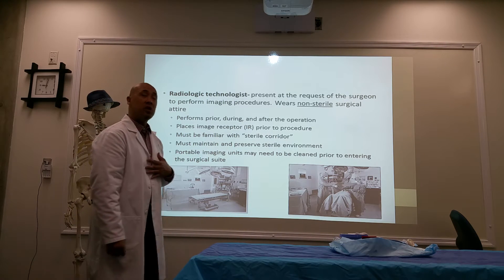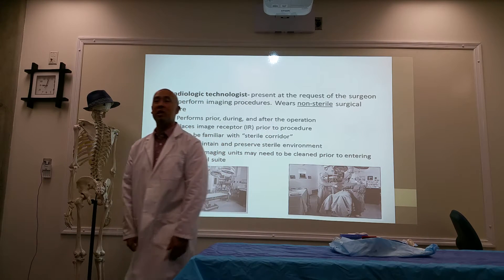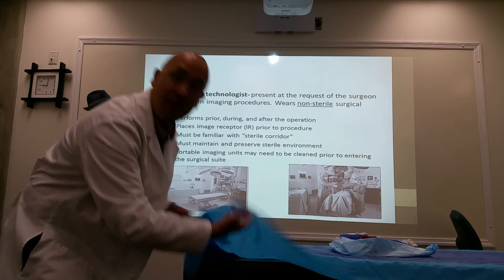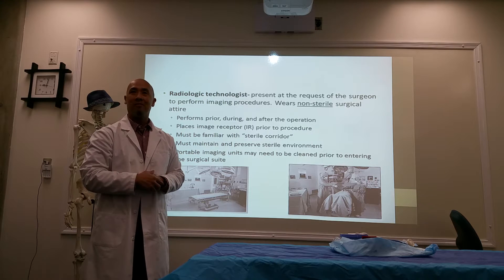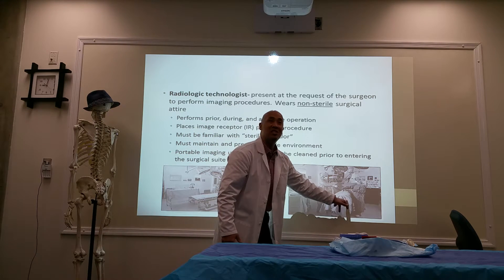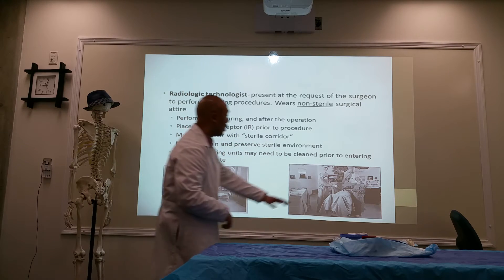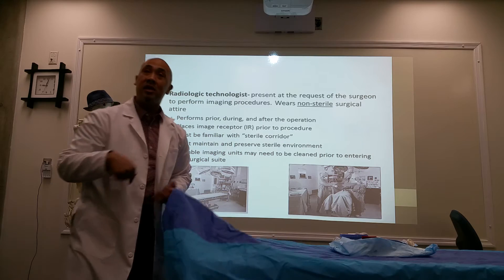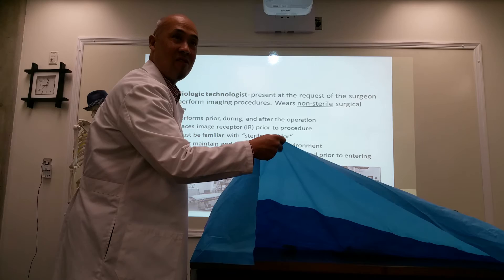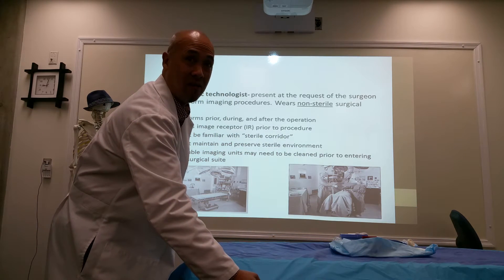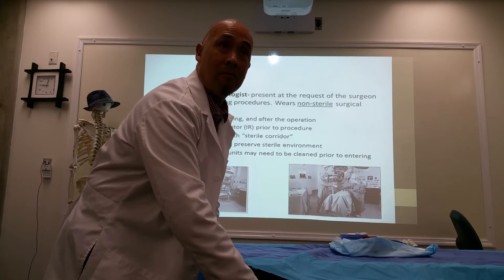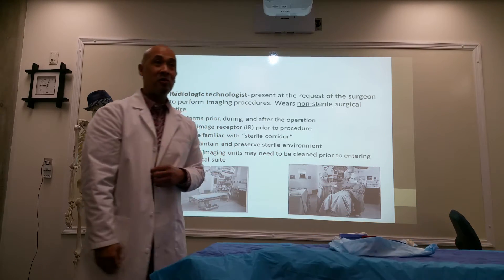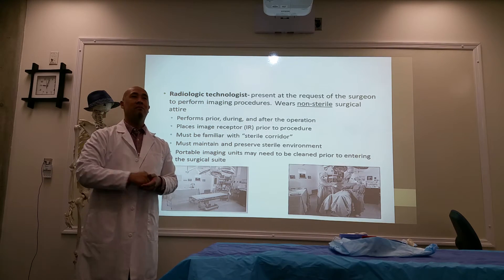If you get called in during the procedure and the patient is already draped, you can grab the drape at the end, lift it up, put your head underneath, and place your image receptor underneath. Here's the key though: you don't want to hold the drape above the level of the table edge. You must maintain it below the level of the edge while getting your image receptor in. If you raise it too high, everything from the edge falls back into the sterile field — and if the doctors and nurses see that, they'll tell you to put it down immediately.